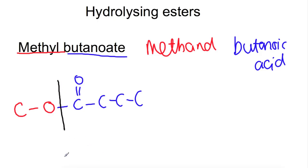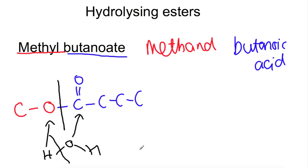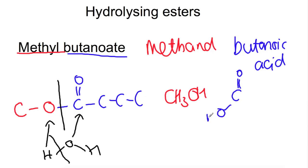This is where the water rejoins. The water splits so that the hydrogen joins back to the alcohol and the OH joins back onto the carboxylic acid, leaving you with CH3OH and C=O to OH with the three other carbons attached — omitting hydrogens here for clarity.